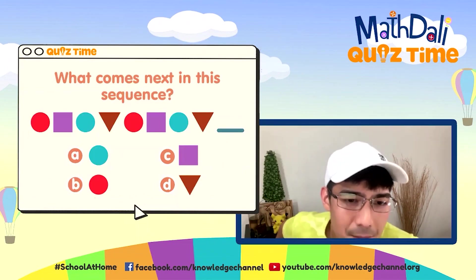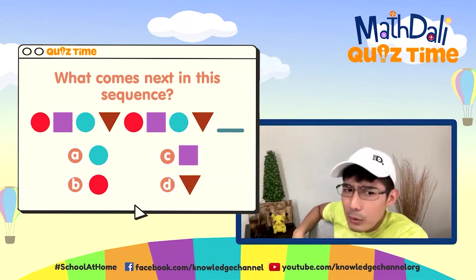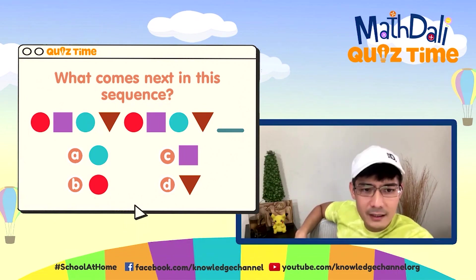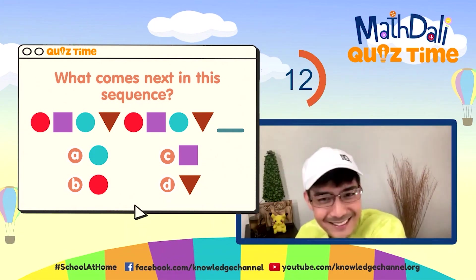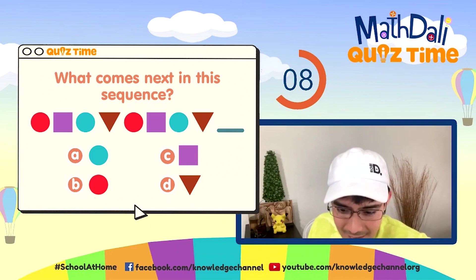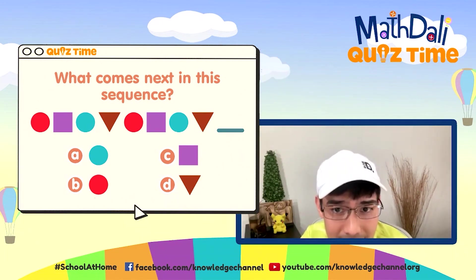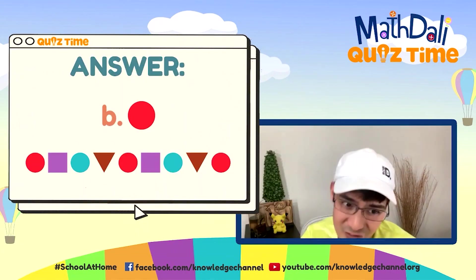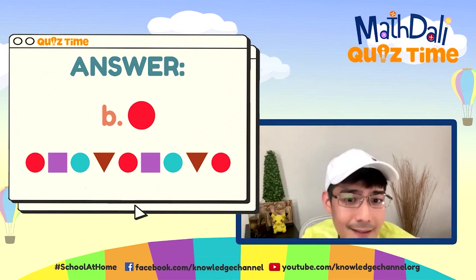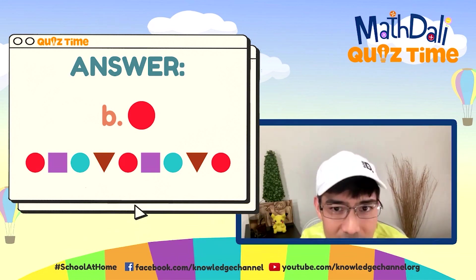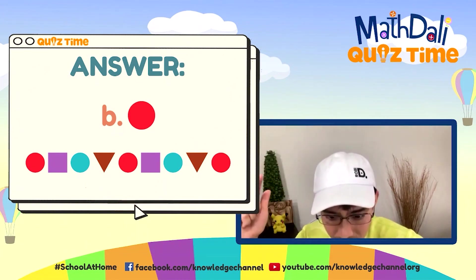Third question: What comes next in this sequence? Analyze yung mabuti. Ang pagpipiliin natin ay A — blue circle, B — red circle, C — violet square, or D — brown triangle. 20 seconds. Ang tamang sagot ay letter B — red circle. Ang pattern natin: una red circle, then violet square, and then blue or teal na circle, and then may triangle na pabaliktad na brown. Uulit na uulit yan, kaya pagkatapos ng brown triangle, balik tayo sa red circle.